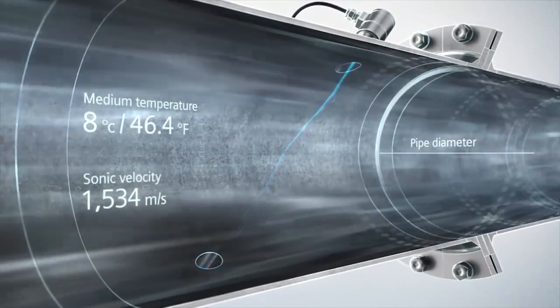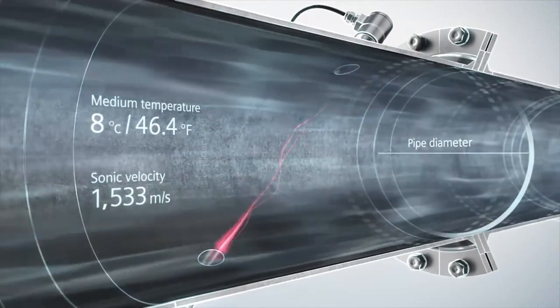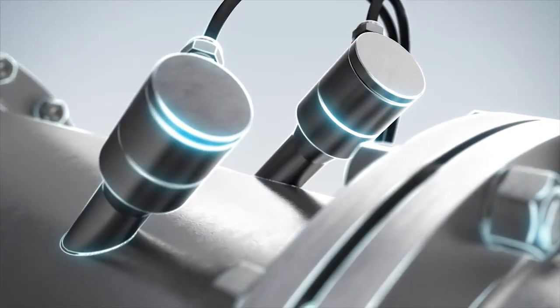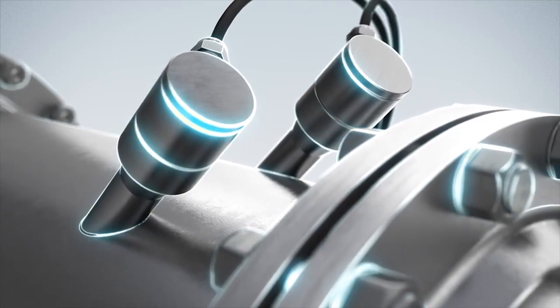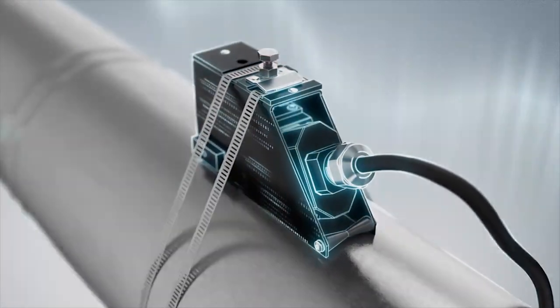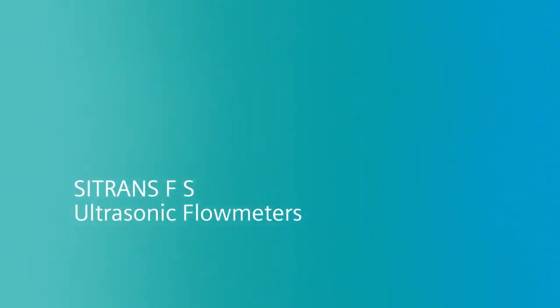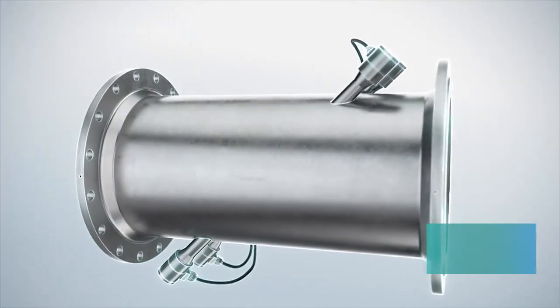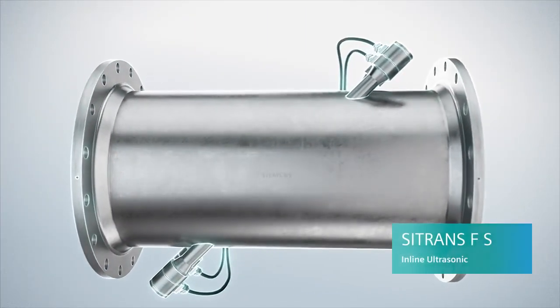The system can also derive parameters like density and viscosity. As the flow meters have no parts that wear, measurements remain constant and the total cost of ownership is low. The inline product family measures with very high accuracy, with sensors in direct contact with the medium.